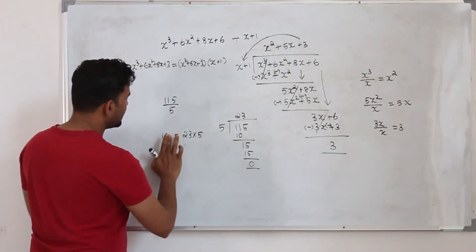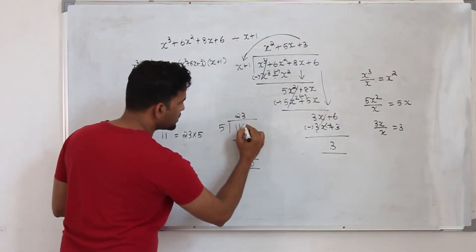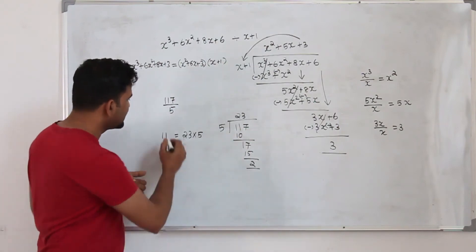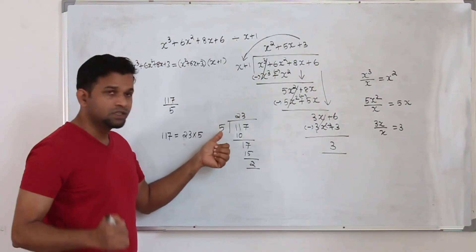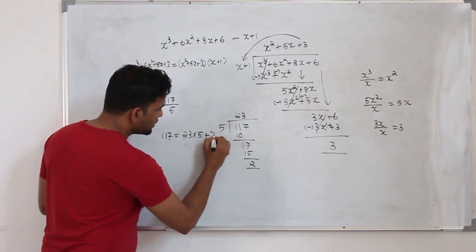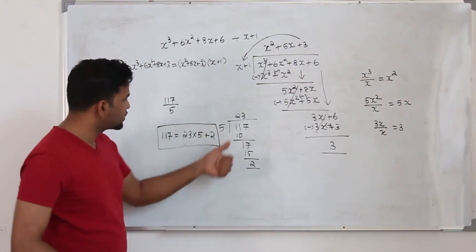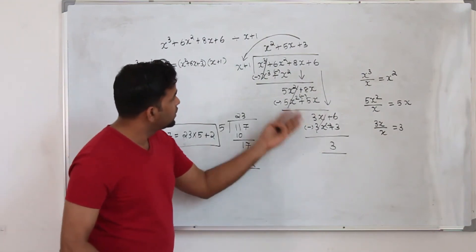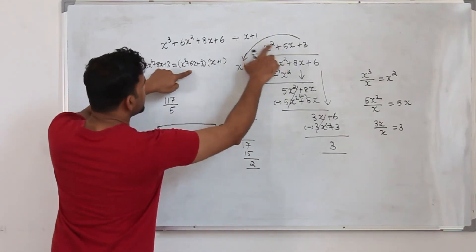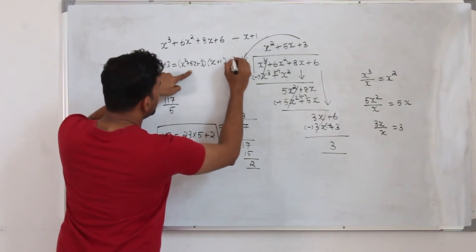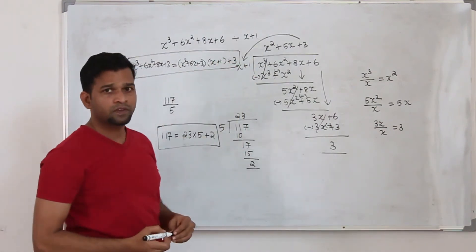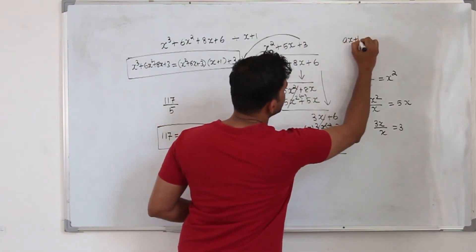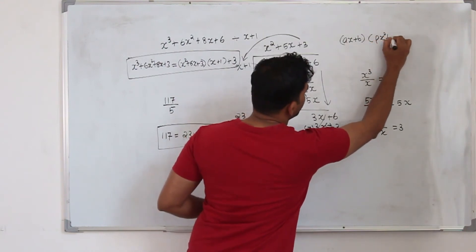Let's look at this scenario: dividing 117 by 5 gives quotient 23 and remainder 2. You can write 117 as question times divisor plus the remainder: 23×5+2. If it's minus 2, you put minus 2. Same thing for the polynomial — if you have remainder 3, write it as quotient times divisor plus the remainder. Whenever a question says divide this polynomial by (ax+b), write the polynomial in the form (ax+b)(px²+qx+r)+s.